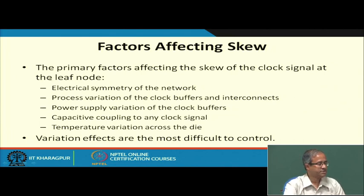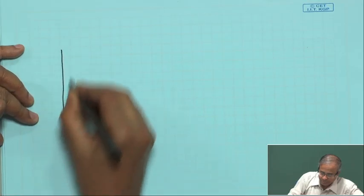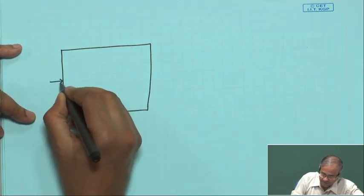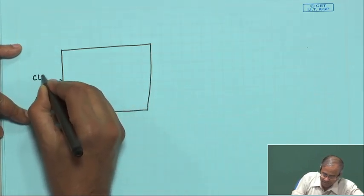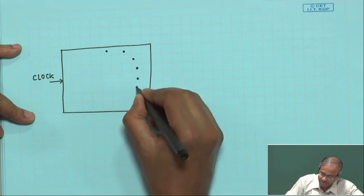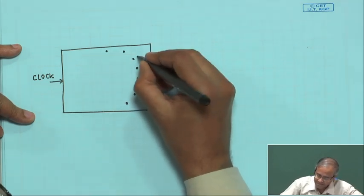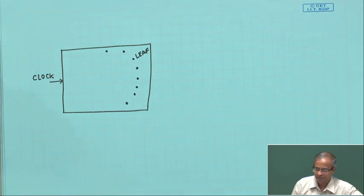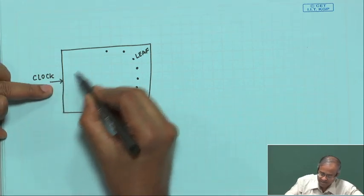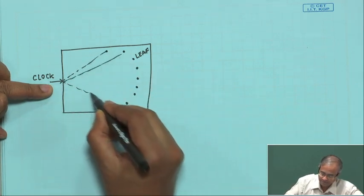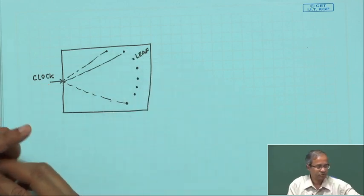I have used a term called leaf node — let me explain it once more. I have a chip, and I have an external clock signal coming from outside, and there are several terminal points where I have to feed my clock signal. These are called the leaf nodes or leaf points of my clock network. In my clock network I have to connect the signal to each of these terminal points.